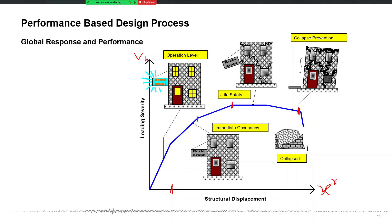This pushover curve — with loading severity VB on the y-axis and roof displacement XR on the x-axis — gives you the complete picture. It is just like the stress-strain curve of a material; if your structure were a material, this curve would be its primary action-deformation curve showing complete behavior. Each point on this pushover curve gives you a physical picture of damage because the computer model is non-linear, so you can see which element has yielded at each step.